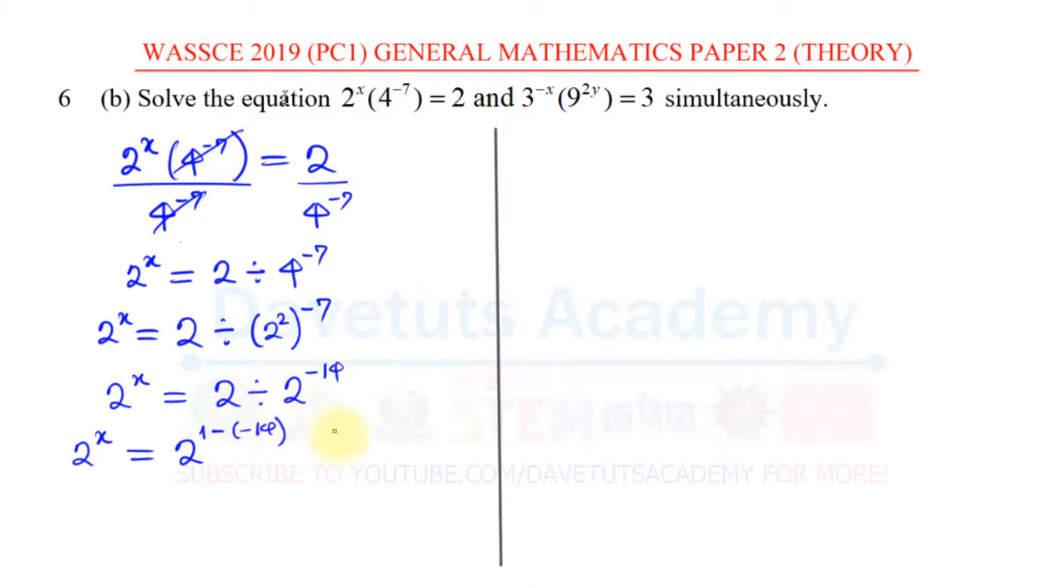So I can express this as 2^(1-(-14)) because negative will multiply one another to give us positive, such that I can now say I have 2^x = 2^15. Since the bases are equal, definitely the powers have to be equal. So x here is 15. That's one of the solutions that we are looking for.